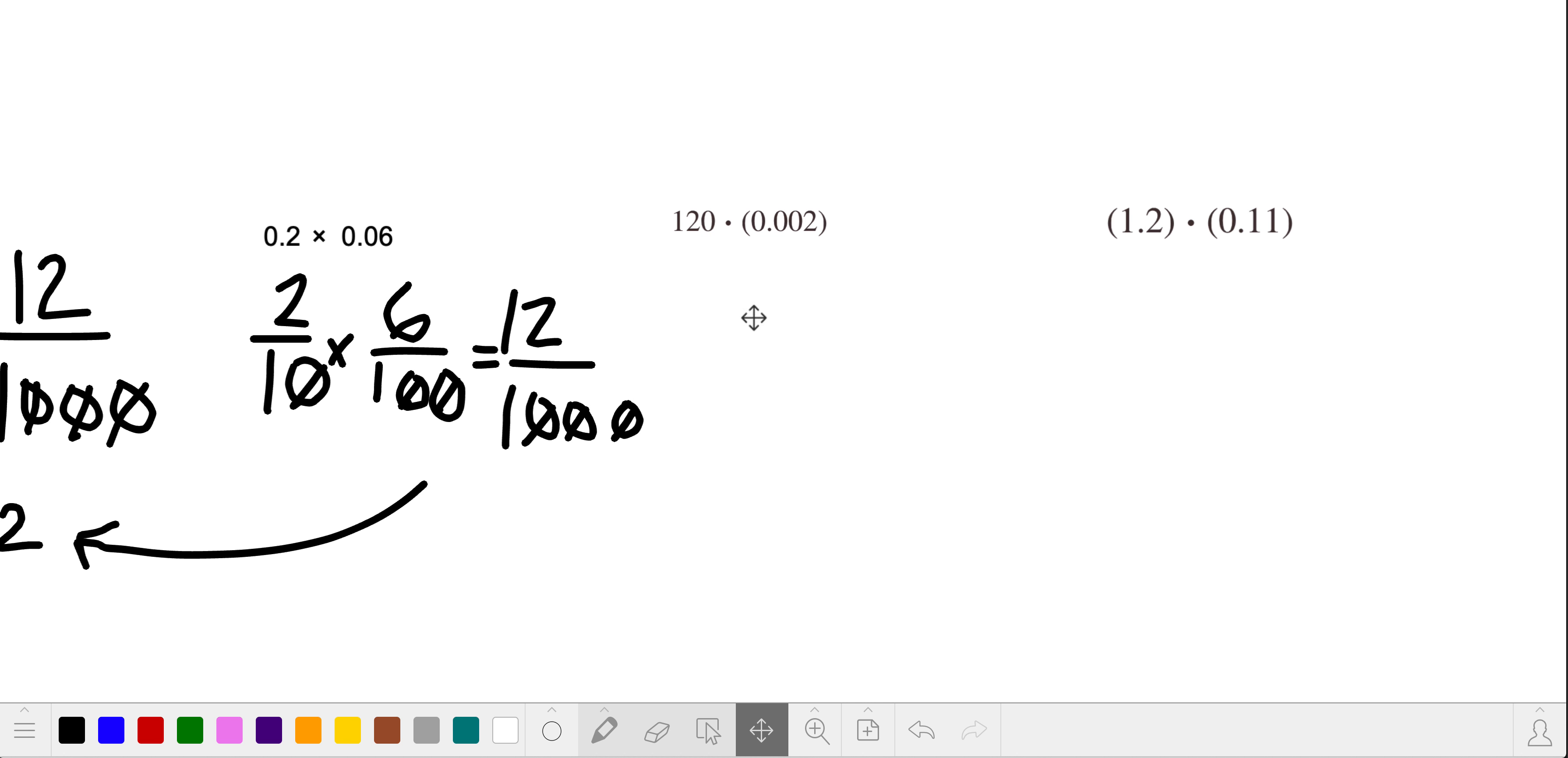This is getting a little bit more tricky. Notice on the left, we have just 120, and on the right, we have 2 thousandths. Don't get tricked by this problem. This is just 120, and we're going to multiply it by 2 thousandths.